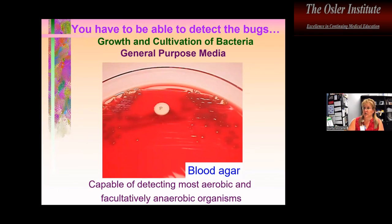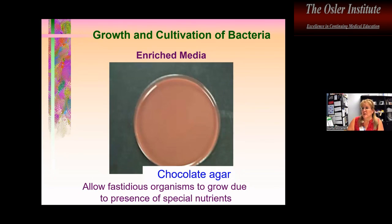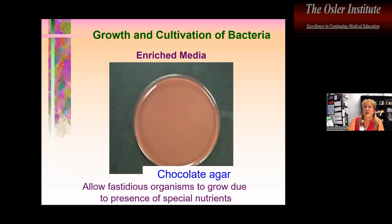Now we need to grow the organisms. For a quick media review: general-purpose media — blood agar, typically 5% sheep blood agar — is used to process most specimens and can detect most aerobic and facultatively anaerobic organisms. Enriched media, the most common being chocolate agar — unfortunately not made of chocolate — historically was made by adding blood to very hot agar, rupturing the red cells and releasing extra nutrients. The same principle applies today, just prepared a bit differently.